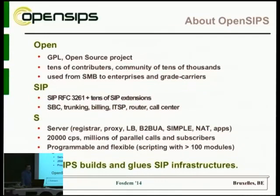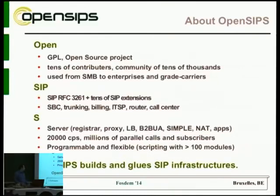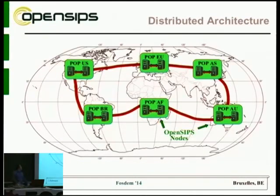There is no media flowing in or out of OpenSIPS. Because of this, you can use it for various scenarios like SBCs, trunking, various call center types, registrations, proxies, and more. You can use OpenSIPS to either build your SIP infrastructure from zero or to glue together various parts of your already existing SIP network. A much better architecture to strive for would be to have multiple points of presence across the world.